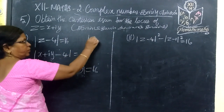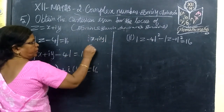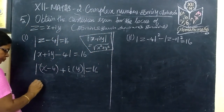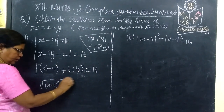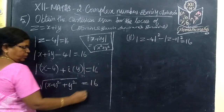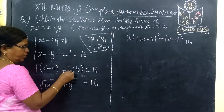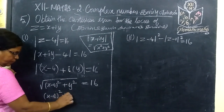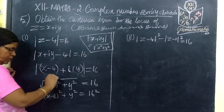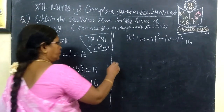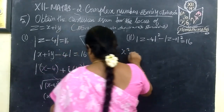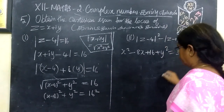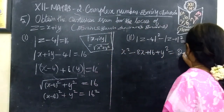The modulus of Z, which is x plus iy, equals root of x squared plus y squared. So the modulus equals root of real part squared plus imaginary part squared, equal to 16. Applying the (a minus b) whole square formula: x minus 4 squared gives 256.